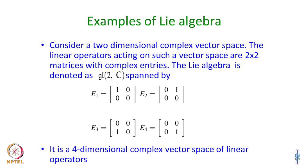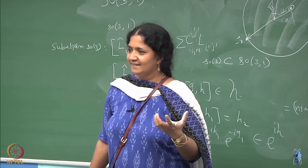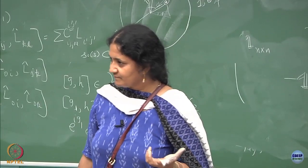Take a two-dimensional complex vector space. Till now I was looking at only real vector spaces; let us go to a two-dimensional complex vector space. Then you can have 2×2 matrices acting as linear operators on this space, with complex entries. There are 8 independent real entries possible in a 2×2 complex matrix — that is 2n² = 8.